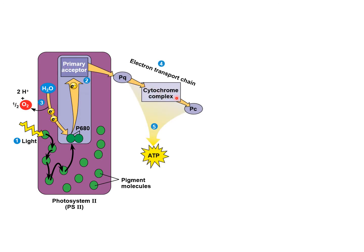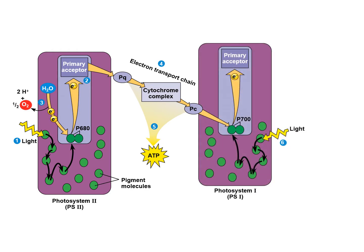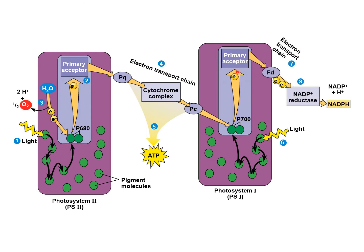We hand off those electrons to electron transport, pumping more protons, and hand off the electron to P700 as it's excited. It's going to receive the electrons and oxidize phytochrome C. Light is doing its thing, and then we hand off to ferredoxin, NADP reductase, and make NADPH.